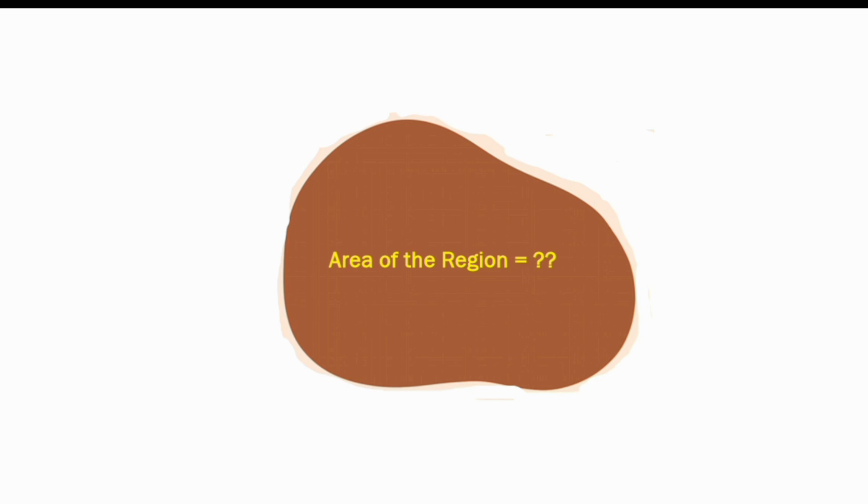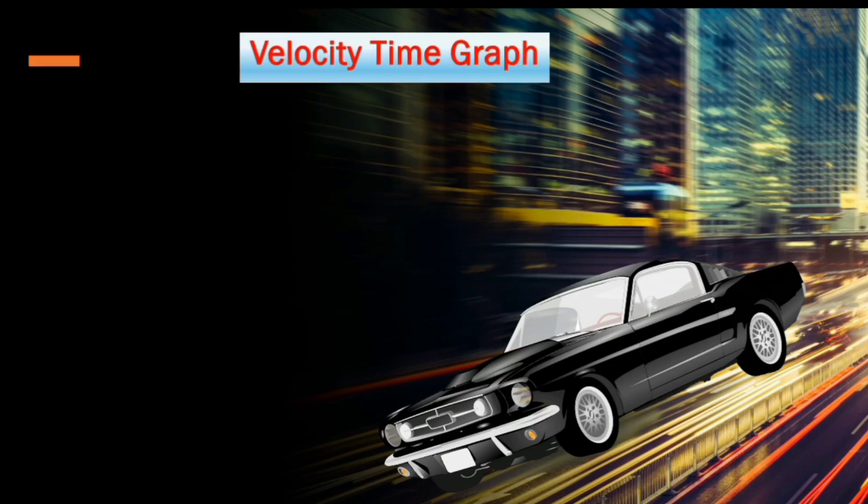Now let me also show you another scenario. Here is a speeding car whose velocity time graph can be given in this way. As you can see the graph is a straight line. Now what will be the area under this graph?